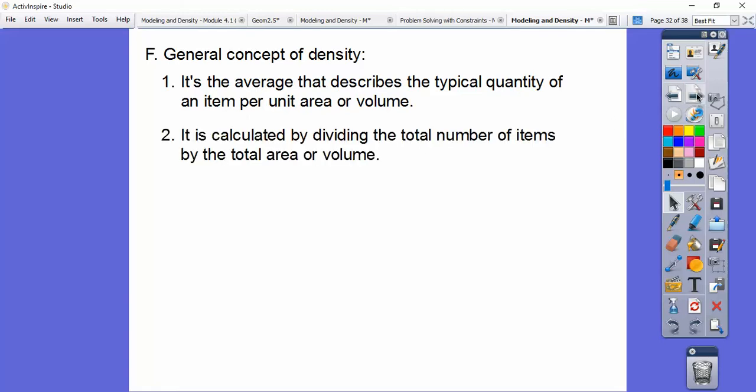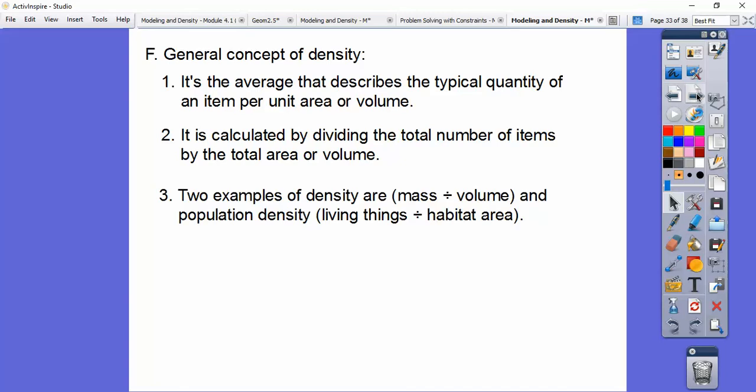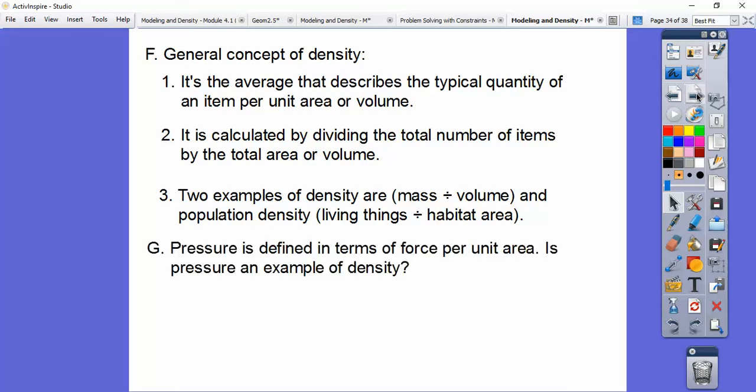So it's calculated by dividing the total number of items by the total area or the total volume. And then so two examples are mass divided by volume or population density, which is population divided by the actual area right there.